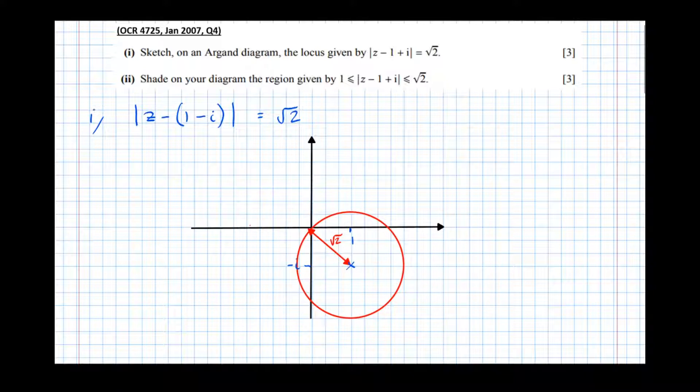So part 2. Shade in your diagram the region given by 1 ≤ |z - (1 - i)| ≤ √2. Well the whole thing less than or equal to √2 will be all of the circle here.